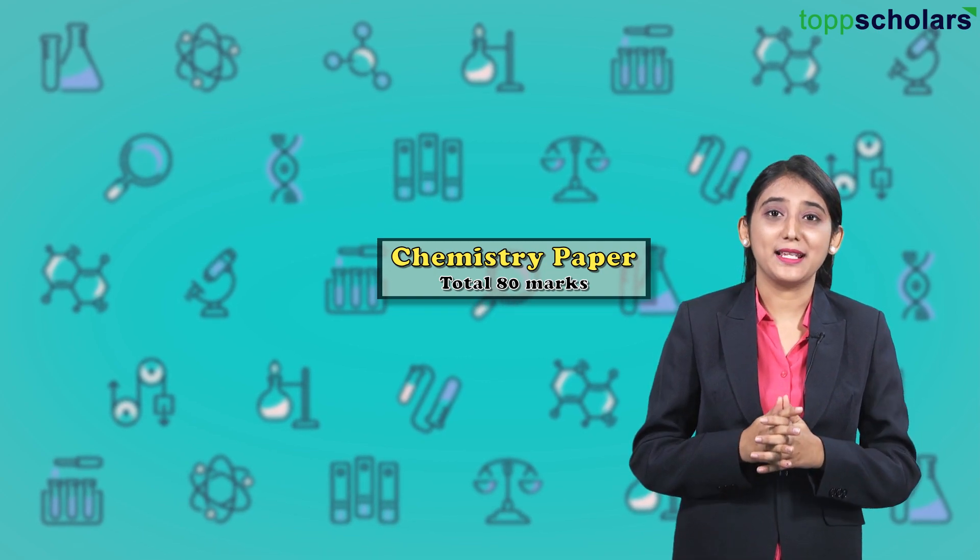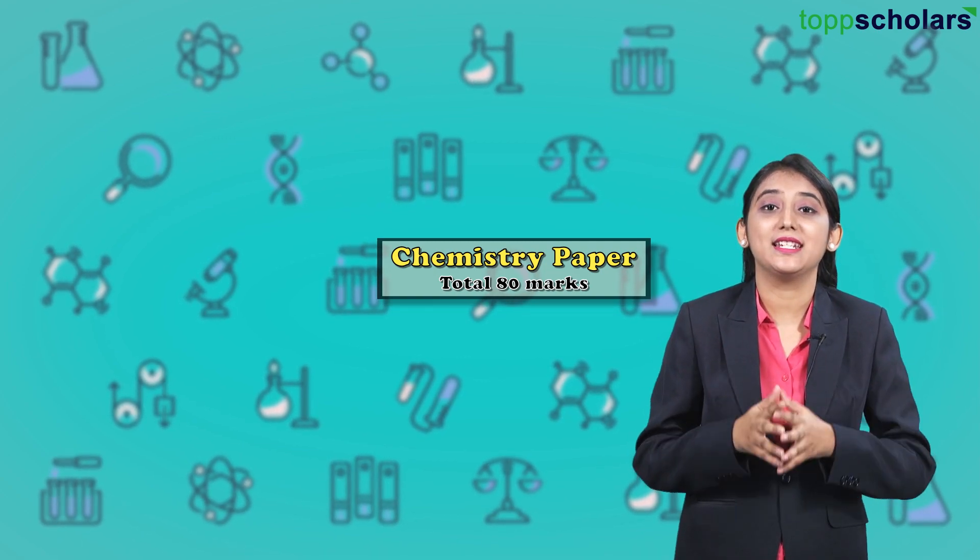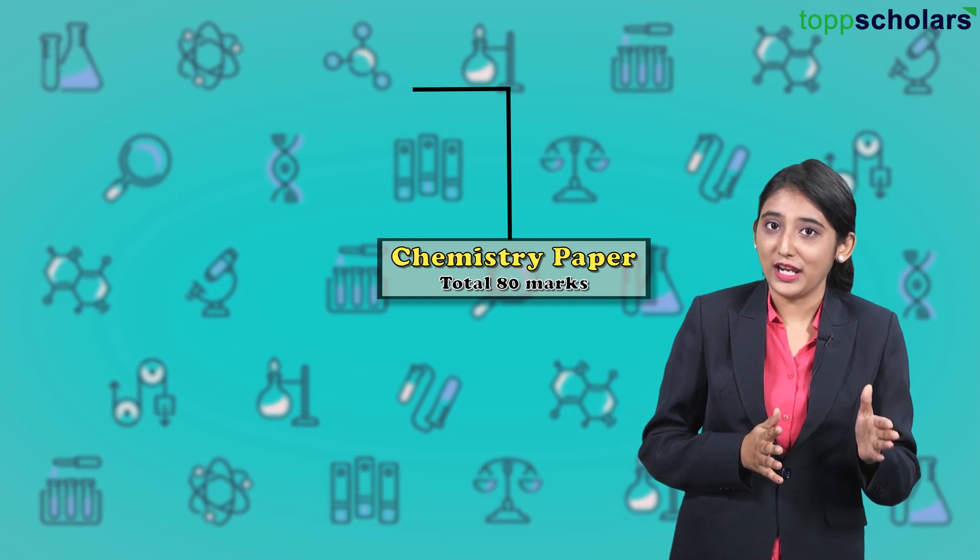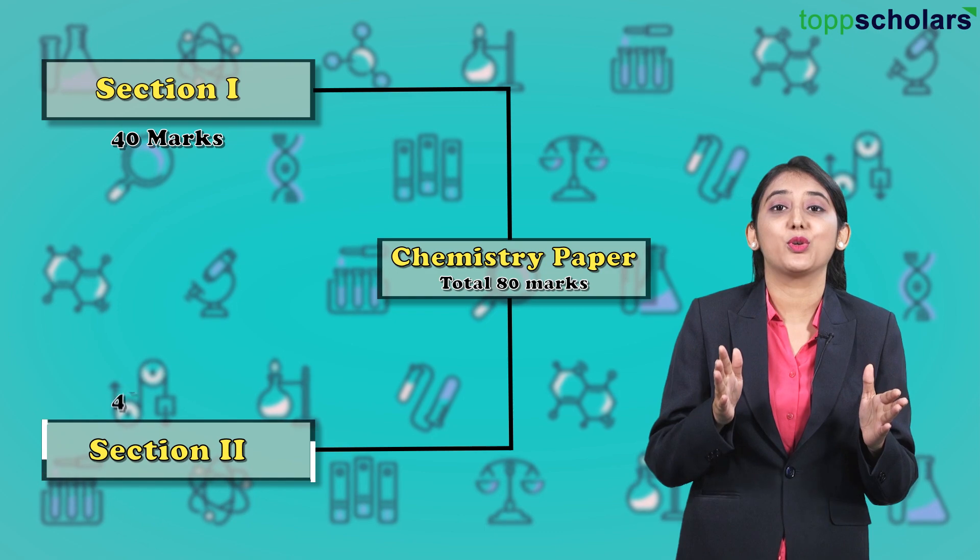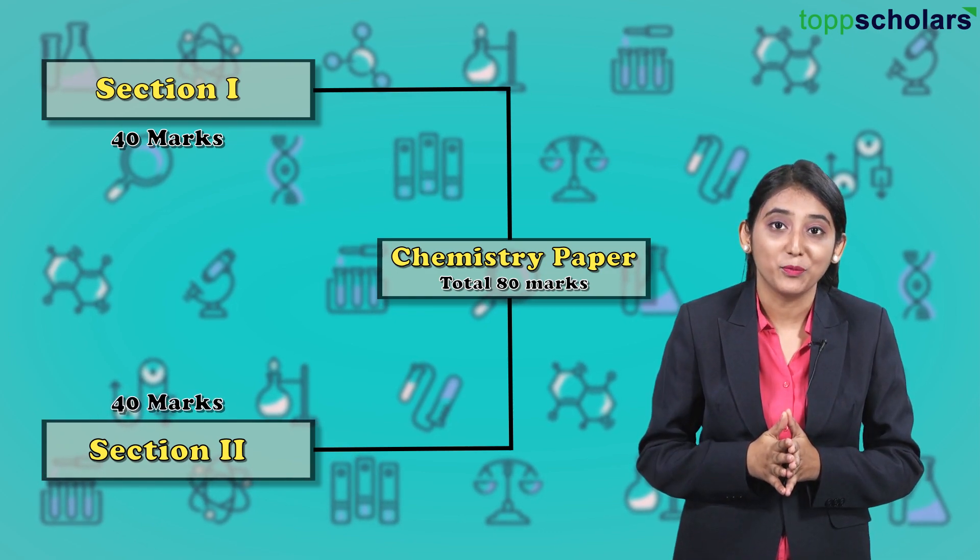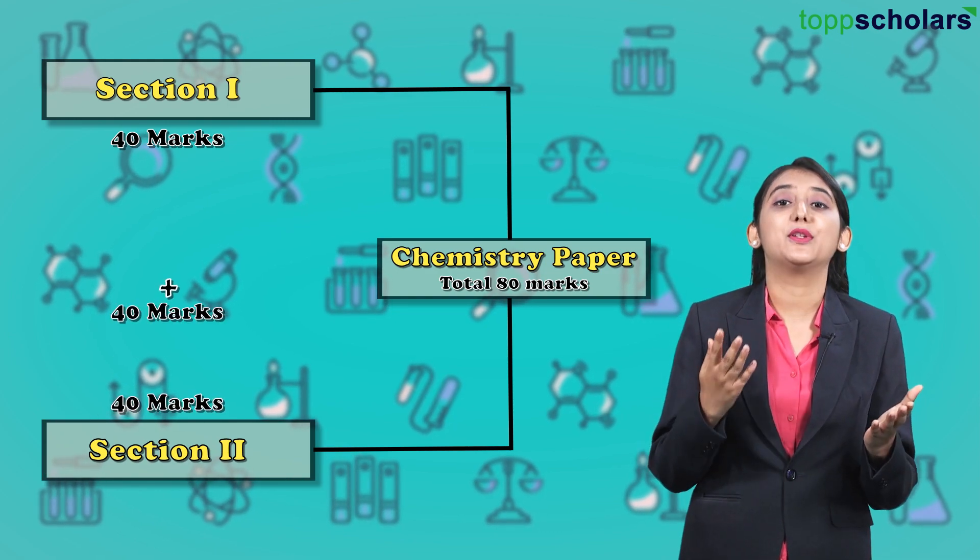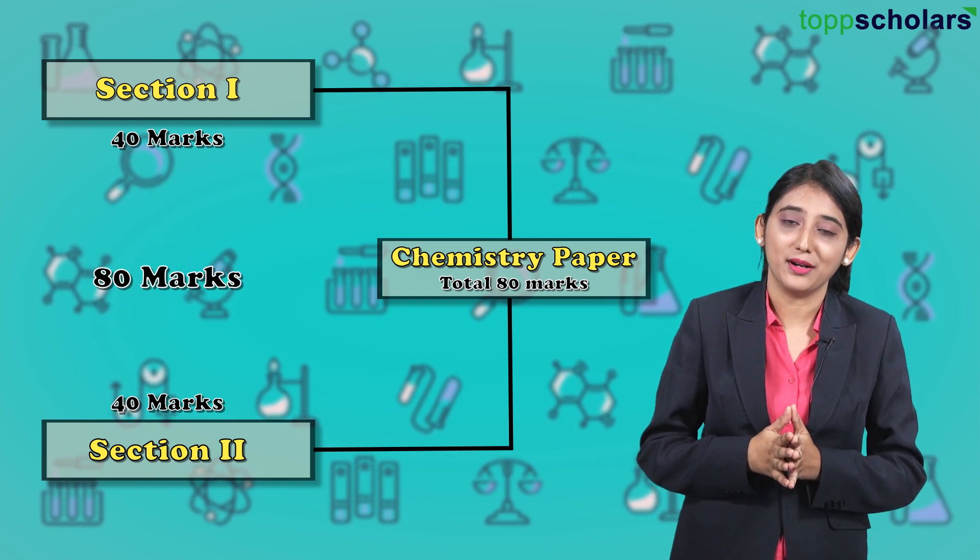This 80 marks has been equally divided into two sections: Section 1, which comprises 40 marks, and Section 2, which also carries 40 marks. So you have 40 plus 40, which gives you a total of 80 marks.